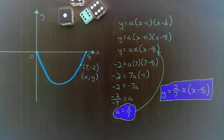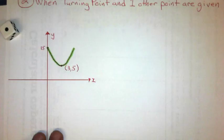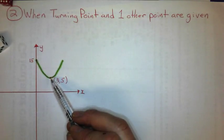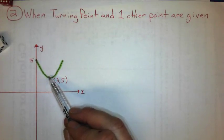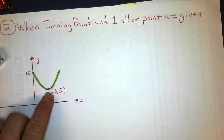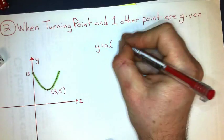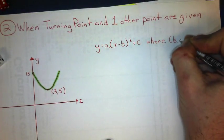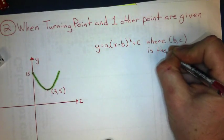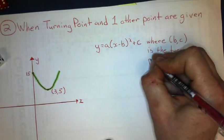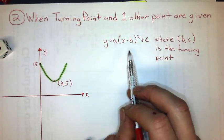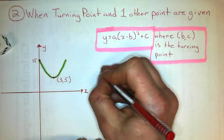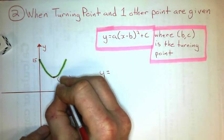Any time I have 0 as an x-intercept, I'll always have x by itself outside the brackets, because x minus 0 is just x. Now let's look at the next case: when we're not given the x-intercepts, but a turning point and one other point on the curve are given. A turning point is also called a vertex, or a maximum or minimum. The general form for this case is y equals a times x minus b, squared, plus c, where the coordinate (b, c) is the turning point or vertex.